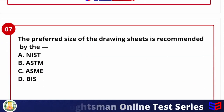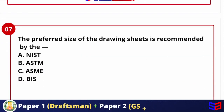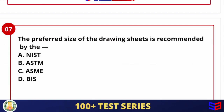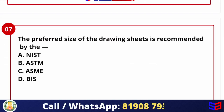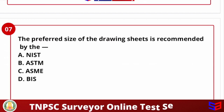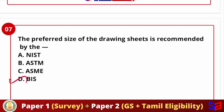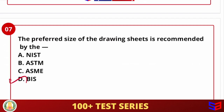The preferred size of a drawing sheet is recommended by which organization? Options include ASME, BAS, and others. For drawing boards, drawing sheets, and engineer scales, the designations are set by the Bureau of Indian Standards — BIS. So when asked who designates drawing sheet or board sizes, the answer is BIS.